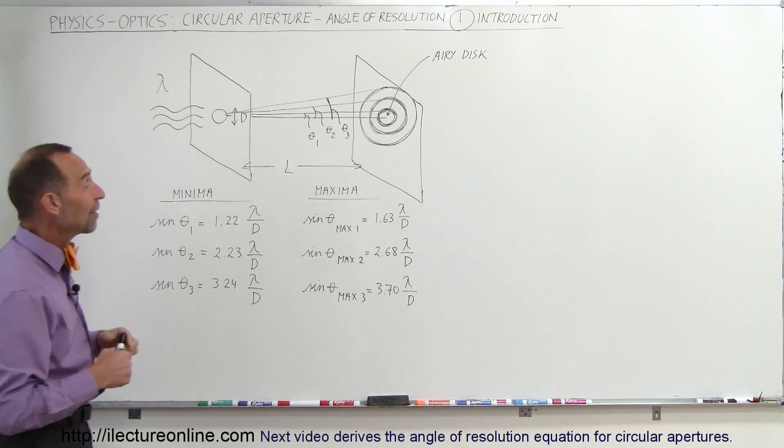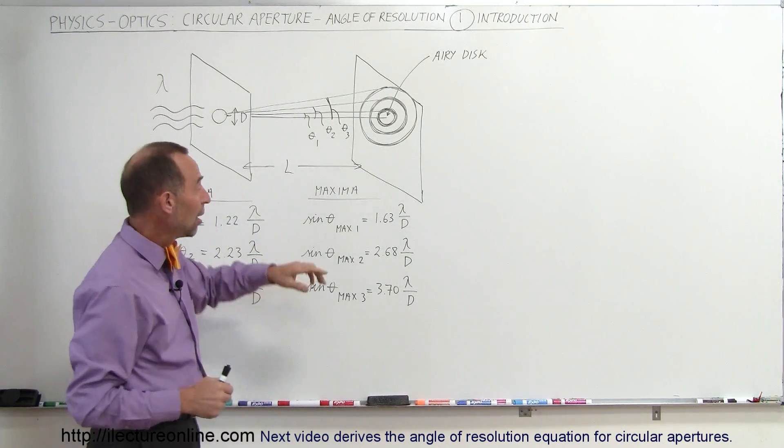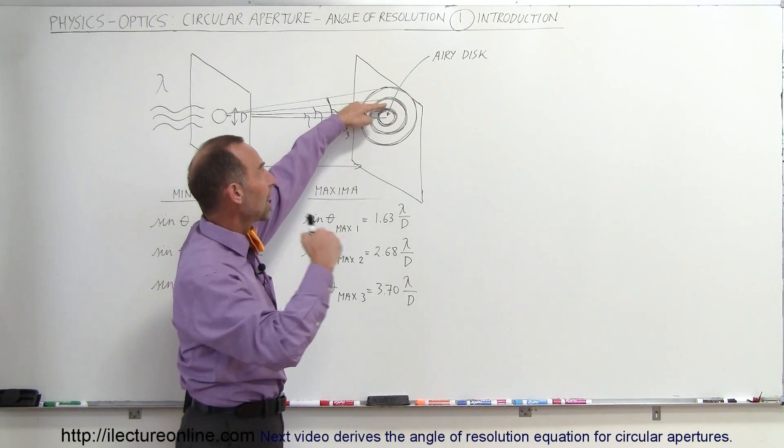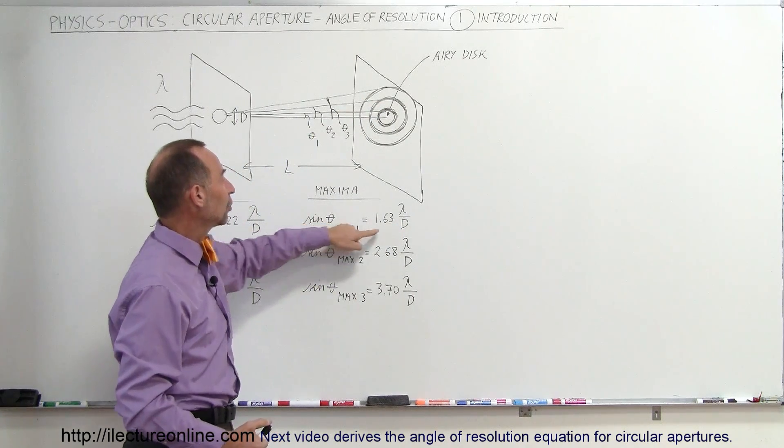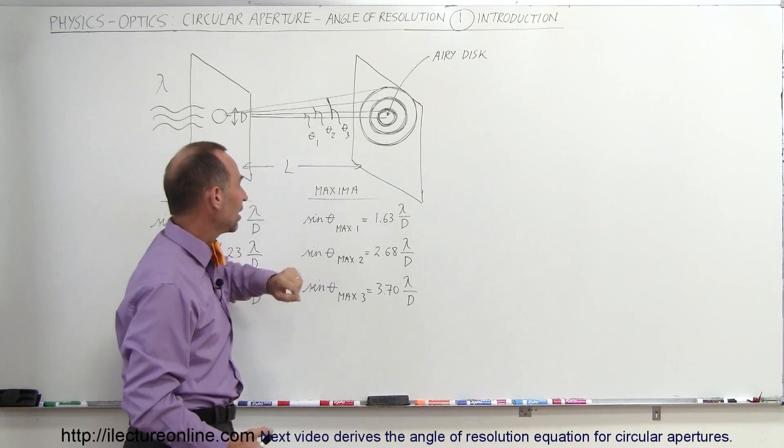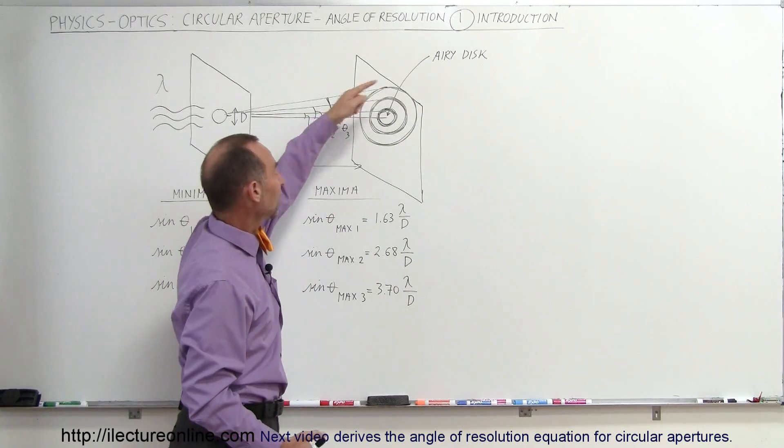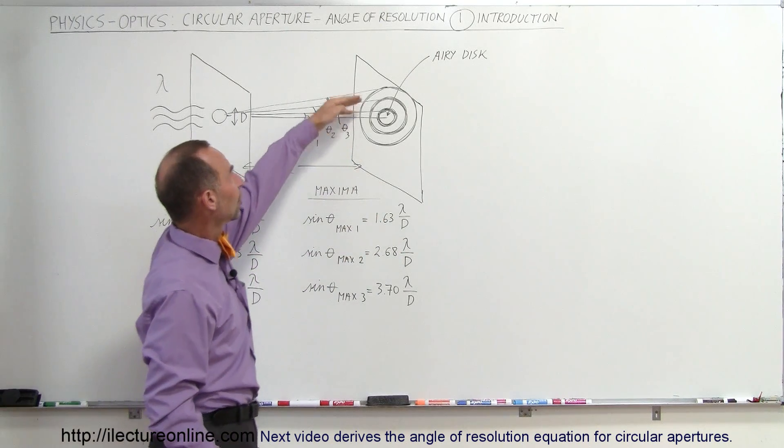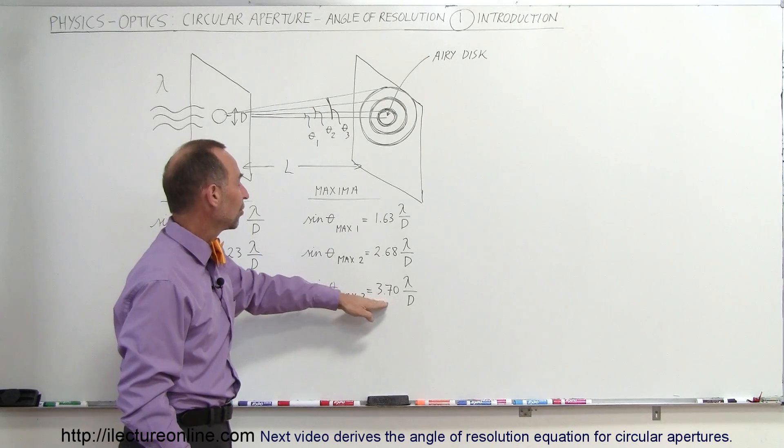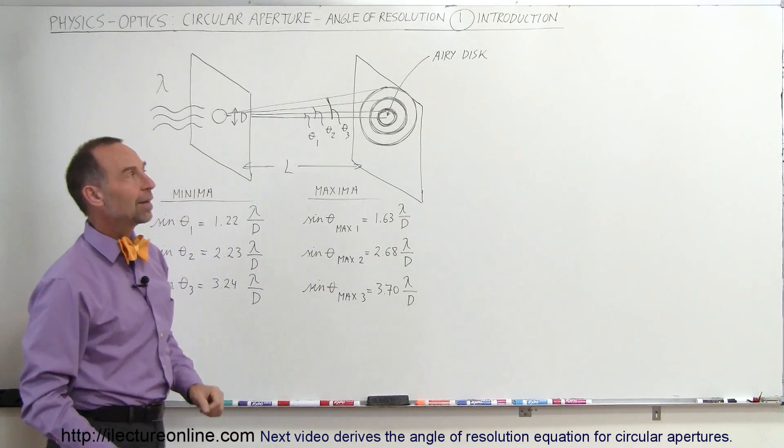The maxima can be found. Now of course we have the central maximum, but the center of the first maximum beyond the Airy disk can be found by taking the angle, sine of the angle equal to 1.63 lambda over D. For the center of the second maximum, it would be 2.68 lambda divided by D. And for the third maximum, it would be sine of theta equals 3.7 times lambda divided by D.